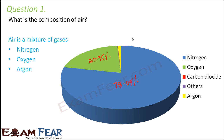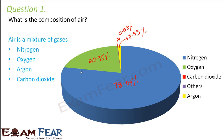Argon makes 0.93% of the air. Carbon dioxide is 0.03%. The rest is other gases in very small amounts. Besides this, air also contains water vapour, dust, and smoke.